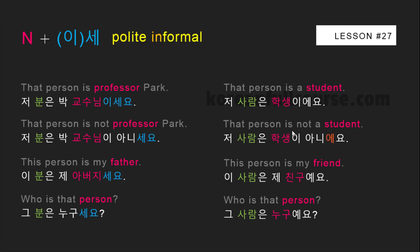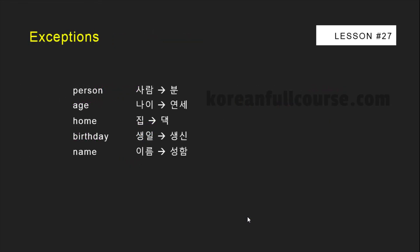And this is a polite informal version of the same sentences. There are a few special words in Korean: when you are talking about the age, home, birthday, and name of quite old people, use the words 연세, 댁, 생신, 성함 instead of 나이, 집, 생일, and 이름.